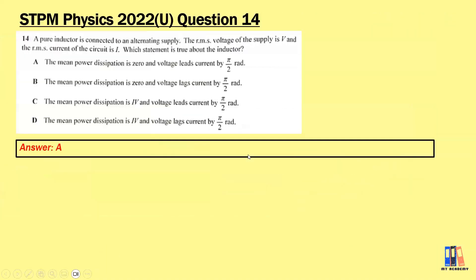Next question: A pure inductor is connected to an alternating supply. The root mean square voltage of the supply is V and the root mean square current of the circuit is I. Which statement is true about the inductor? The answer would be A, that we have the mean power dissipation is 0 and the voltage is leading the current by π/2 radians.